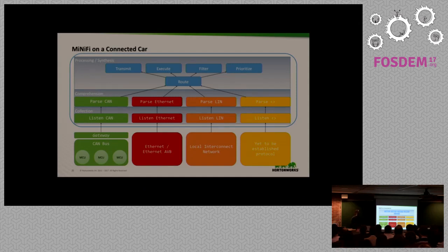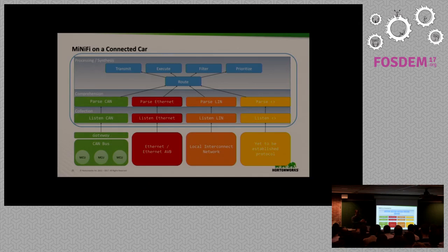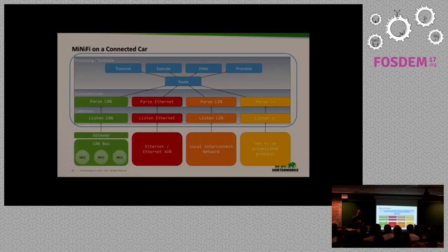MiNiFi can tag it, prioritize it, and filter stuff out based on geographic location. For example, if you're operating in China, you're not allowed to send that information to a computer outside of China — so you can't just say Ford has one global data center. You might need one for Europe, one for the US, one for China. MiNiFi can start routing, encrypting, prioritizing, and filtering that information while it's still on the car.